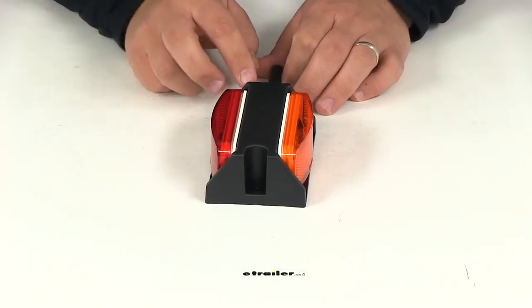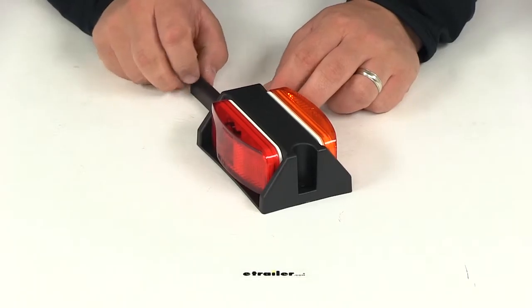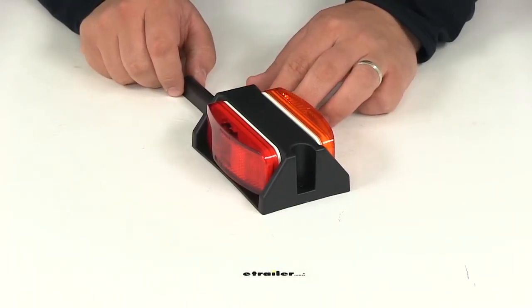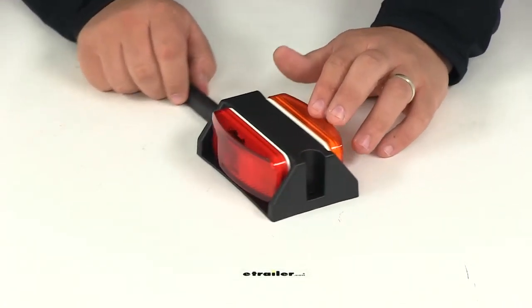This part number includes two reflector markers, clearance lights, and a black molded plastic fender mount bracket. It functions as both front and rear clearance lights for trailers more than 80 inches wide. Red for the rear and amber for the front.